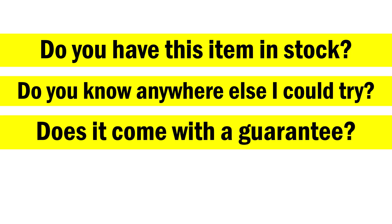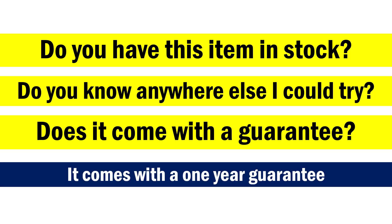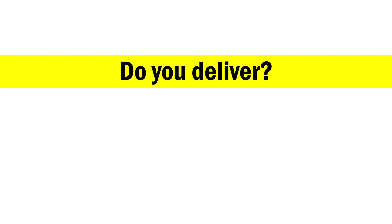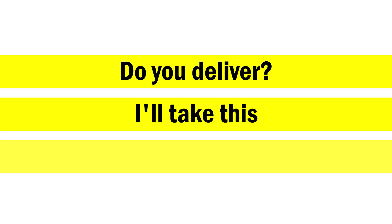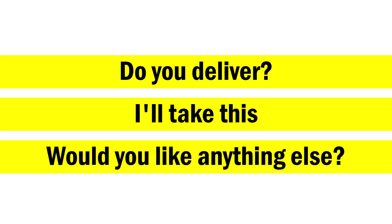'Does it come with a guarantee?' The answer might be, 'It comes with a one-year guarantee' or a two-year guarantee. 'Do you deliver?' — some shops deliver, some may not. When you're ready to buy, say, 'I'll take this.' The salesperson may ask, 'Would you like anything else?' or simply, 'Anything else?'